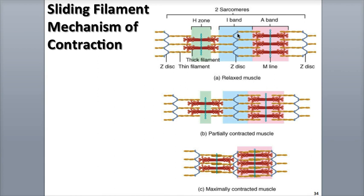Remember, the I-band is made up of the thin filaments and Z-discs, and the H-zone consists of the M-line protein, myosin, shown by this chain, and the thick filaments. Even though these two sarcomere regions disappear, the lengths of the thin and thick filaments and the overall width of the A-band, shown in pink, stay relatively the same. The sarcomere shortens because the Z-discs found on either side of the sarcomere that the thin filaments are attached to are pulled closer together.